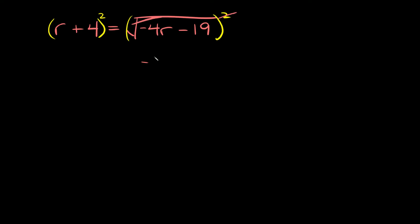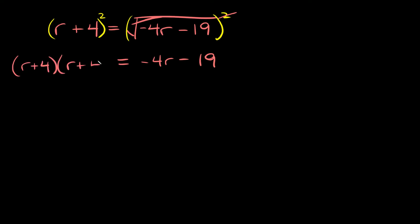On the right side, the square root and the exponent cancel out, so we're just left with negative 4r minus 19. And that's equal to the left side, r plus 4 squared. Let's multiply this out — we're going to have r plus 4 times r plus 4.